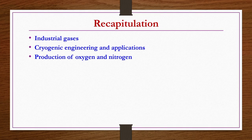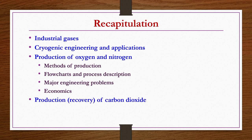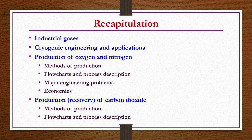We saw the production of oxygen and nitrogen, including methods of production, flowcharts, process descriptions, major engineering problems, and the economics — the consumption pattern of these two gases. Further, we studied the recovery of carbon dioxide, since CO2 is produced in many industrial processes. Two important methods of production and their corresponding flowcharts with process descriptions were covered.